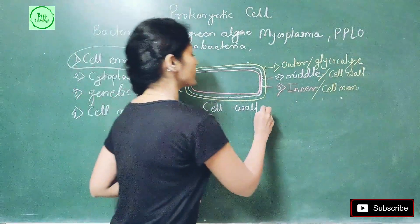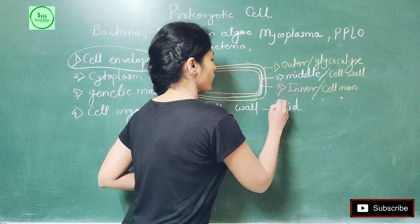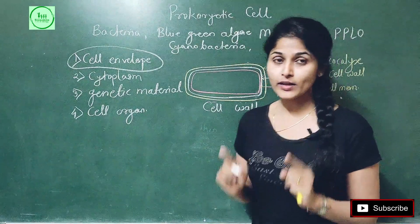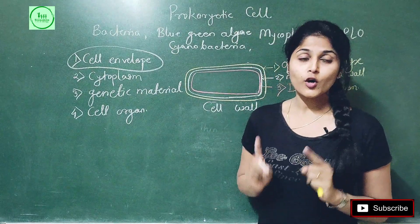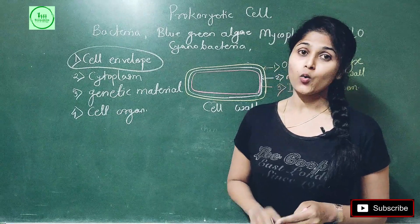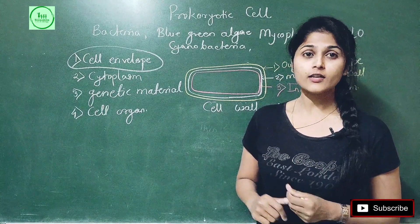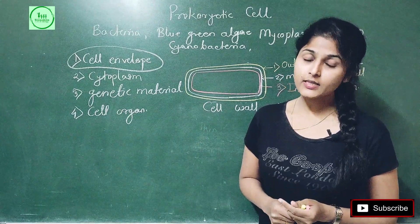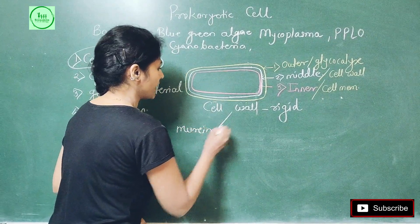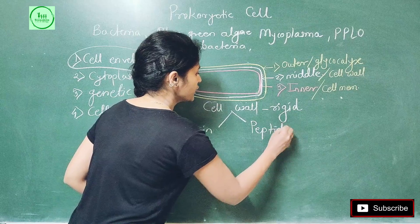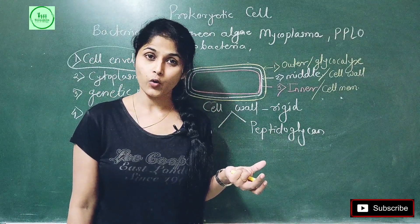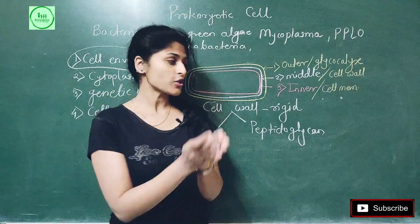Because the cell wall is rigid and non-elastic in nature, it provides proper size, shape, and structure to the bacterial cell. The bacterial cell wall is made up of two types of chemicals: the first is murein, and the second is peptidoglycan. These are the two substances from which the cell wall is constructed. On the basis of this composition, there are two types of bacteria.